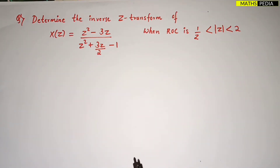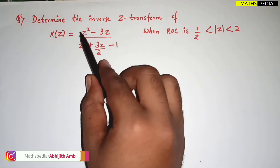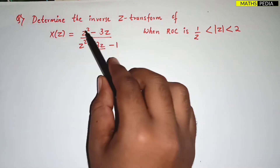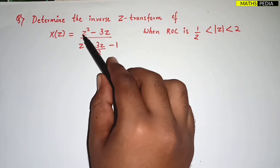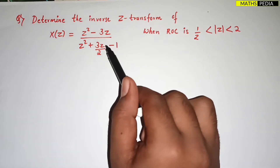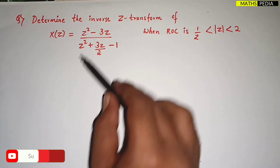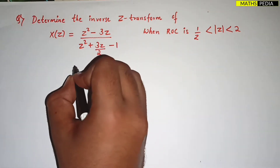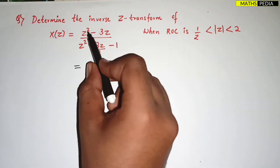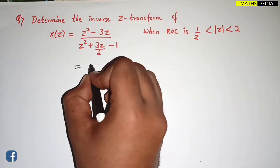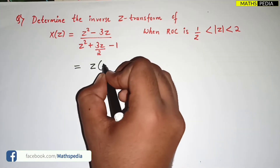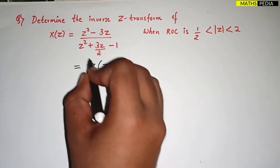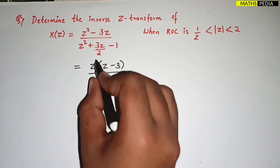The first step is to simplify X(Z). Check whether it is in positive powers — Z should appear as Z, Z², Z³, etc. This expression is already in positive powers. In the numerator, we can take Z as common, giving Z(Z - 3) in the numerator.